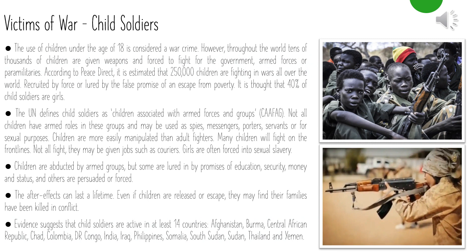Child soldiers: the use of children under 18 is considered a war crime. However, tens of thousands of children are given weapons and forced to fight. It is estimated that 250,000 to 300,000 children are fighting in wars worldwide, recruited by force or lured by the false promise of escape from poverty. It is thought that 40 percent of child soldiers are girls. The UN defines child soldiers as children associated with armed forces and groups — not all have armed roles; some are used as spies, messengers, porters, servants or for sexual purposes. Many children fight on the front lines, often sustaining the brunt of casualties.